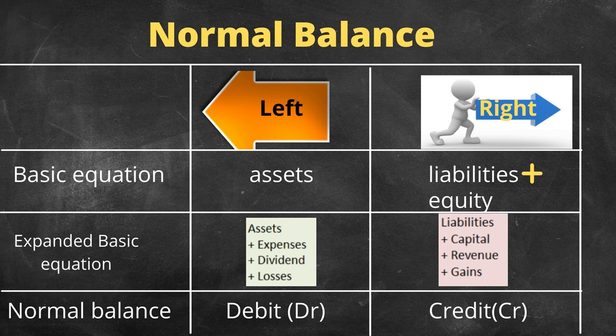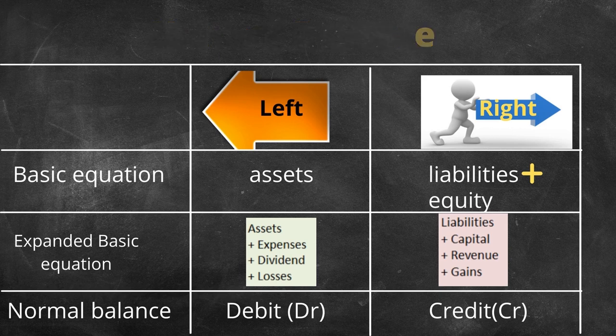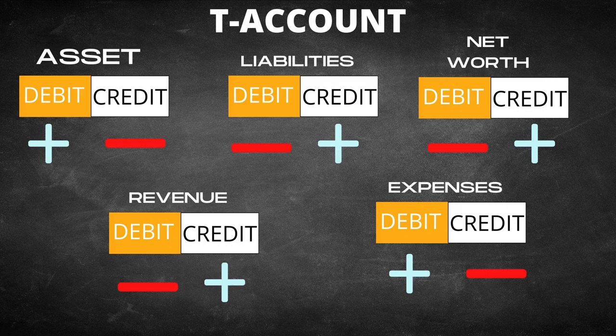When recording transactions in journals and ledgers, the five major account categories are increased or decreased by debits or credits as shown in the presentation. This is also useful when making a T-account.